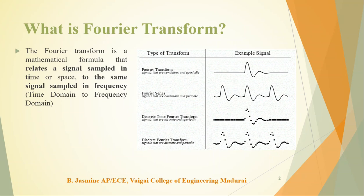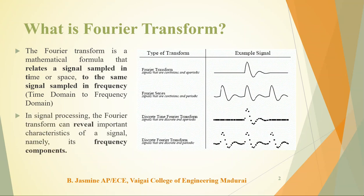What is Fourier Transform? As we all know, a Fourier Transform is a mathematical formula that relates the time domain to the frequency domain. In simple terms, the Fourier Transform relates the signal sampled in time to the same signal sampled in frequency. The Fourier Transform reveals the frequency content of the signal, and in signal processing it can reveal important characteristics of the signal, namely its frequency components.